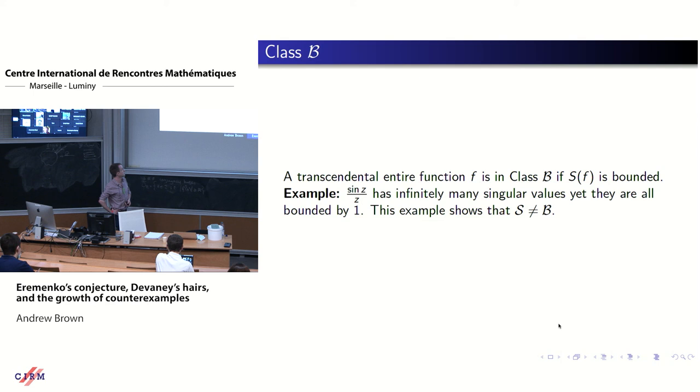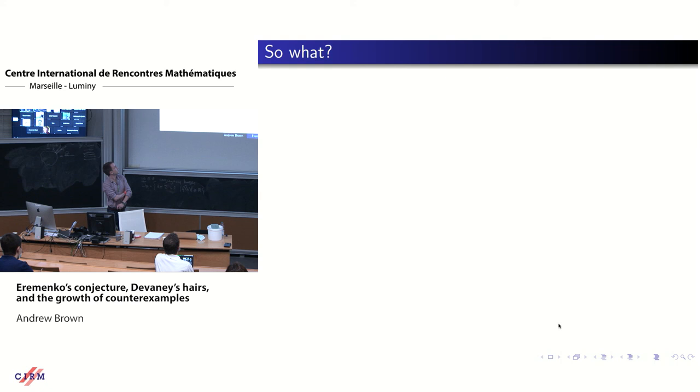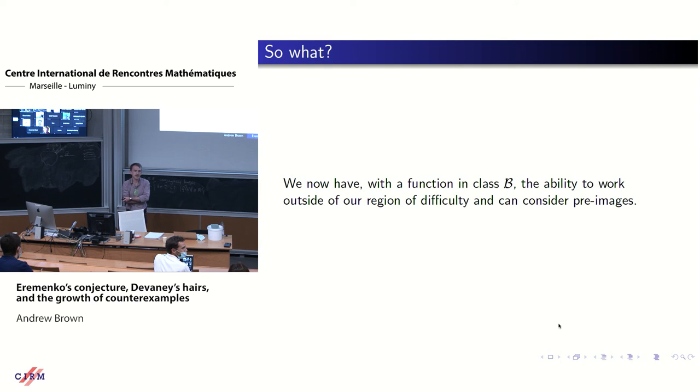But for class B, the B's for bounded. When your set of singular values is bounded, then it's in class B. However, it doesn't mean you have finitely many. For sine Z over Z, that's got infinitely many, but they're all bounded by one. The calculation for that basically shows you're solving for Z equals tan of Z, and so the modulus is cos of Z at those points.